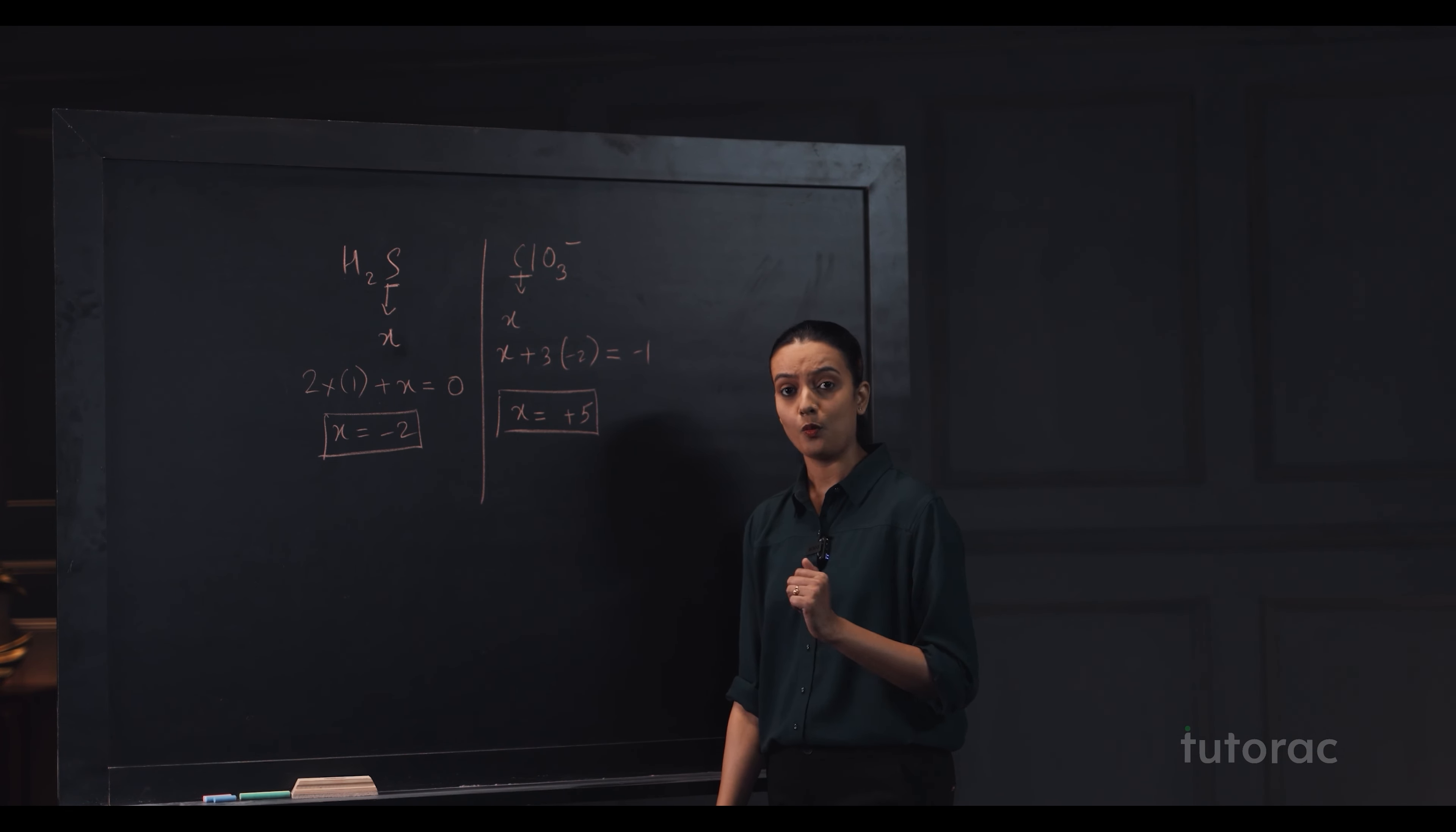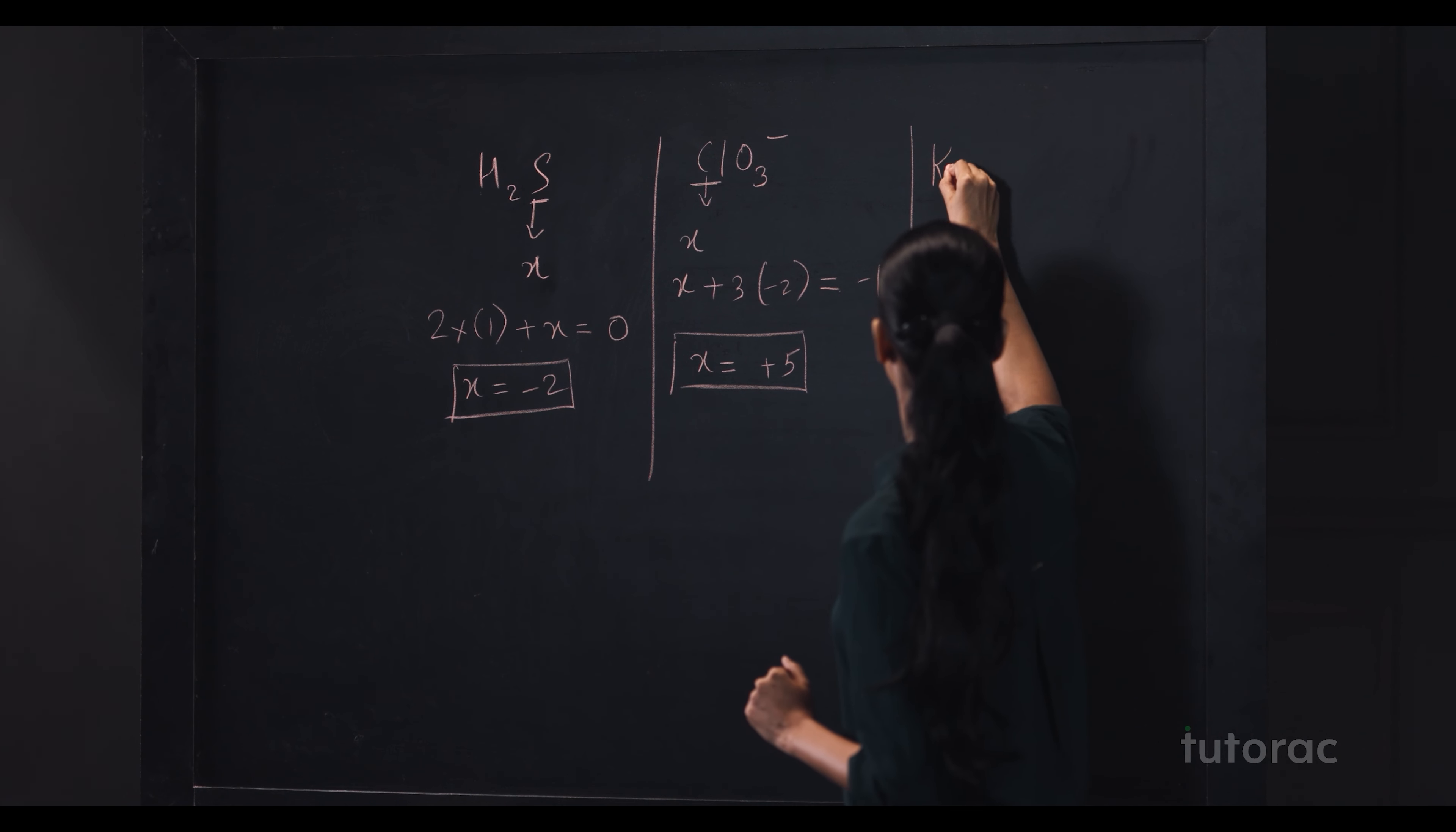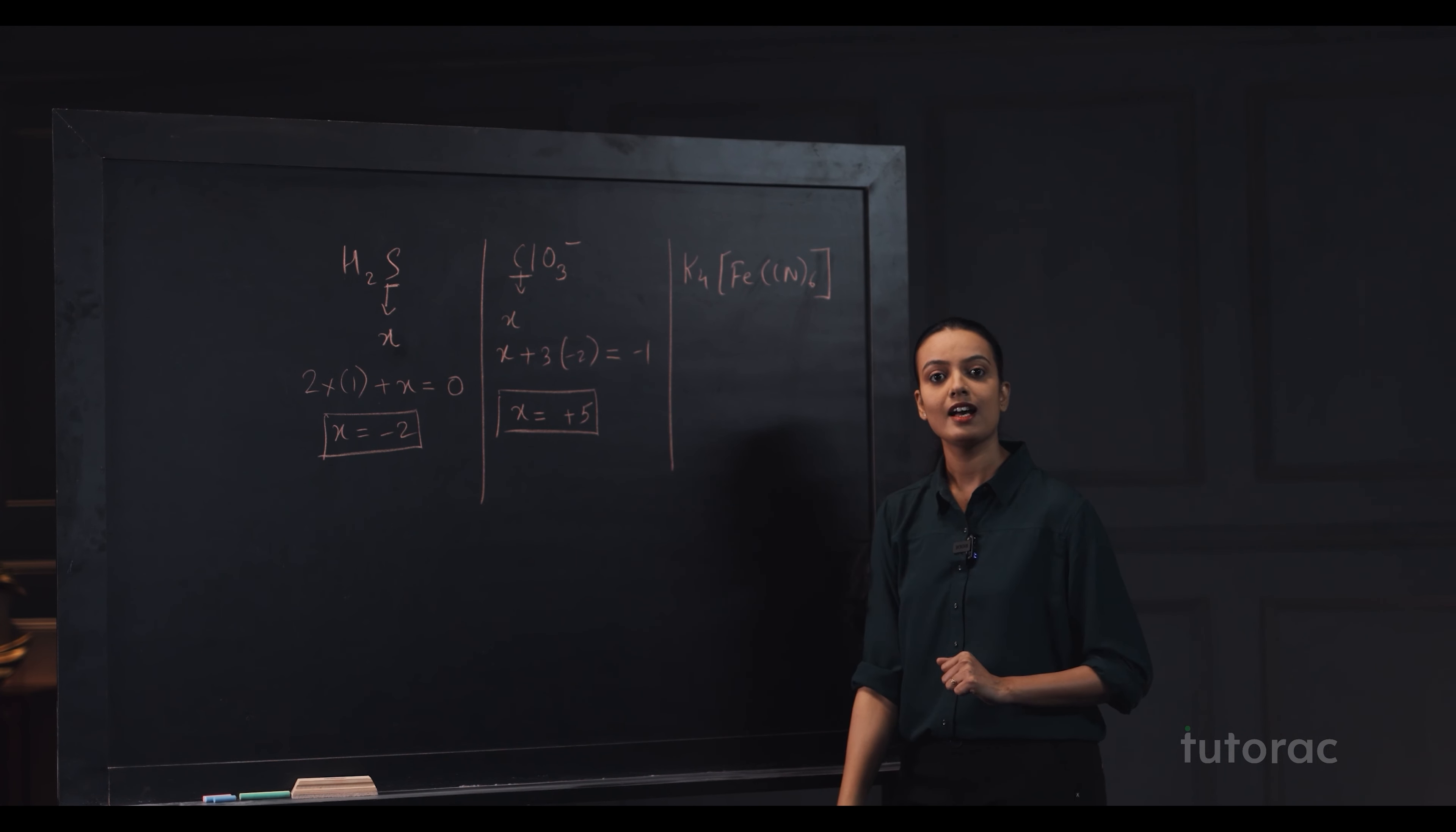So, from here you get X equals to plus 5 which is the oxidation number of chlorine. I will give you one more complex compound. Like here,